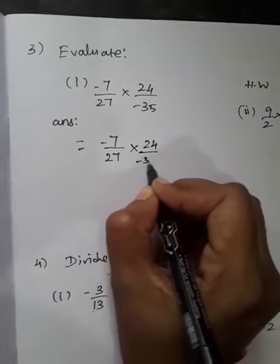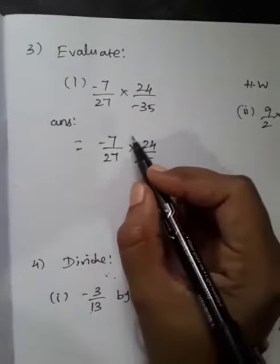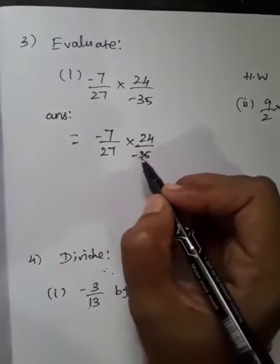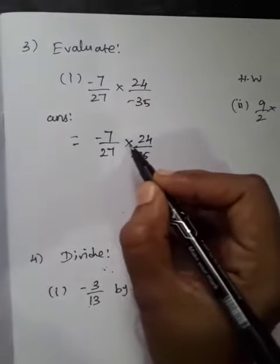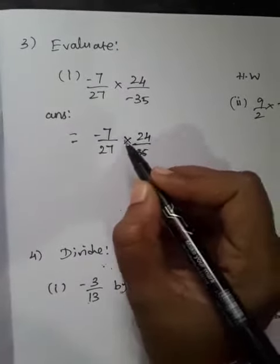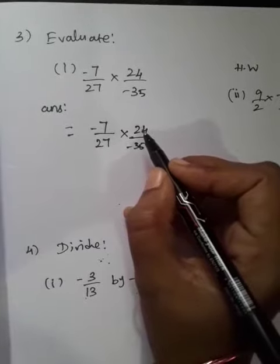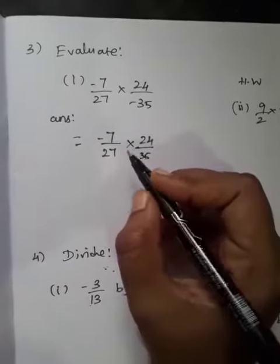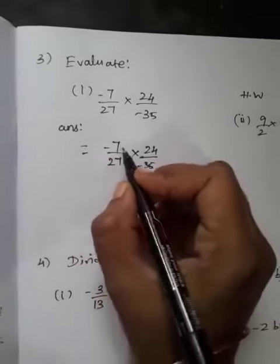Dear children, whenever you have multiplication in rational numbers, try to do cross-cancellation. For example, 7 and 35 you can cancel. If you can cancel 24 and 27, you may do so. Now first, I am going to look at these two.